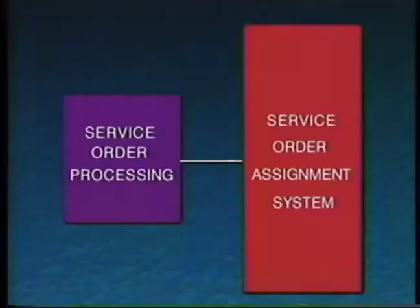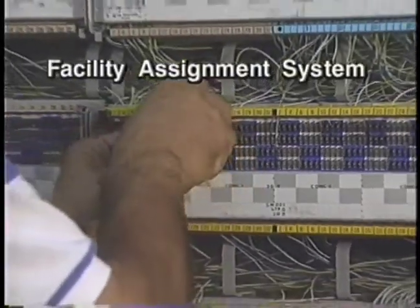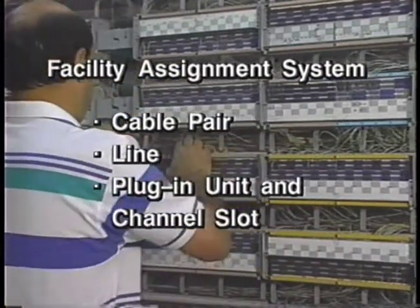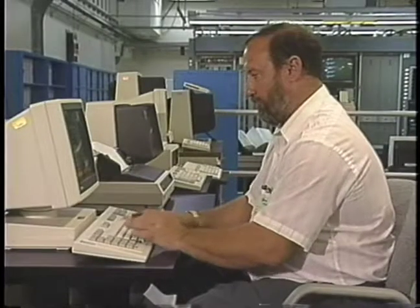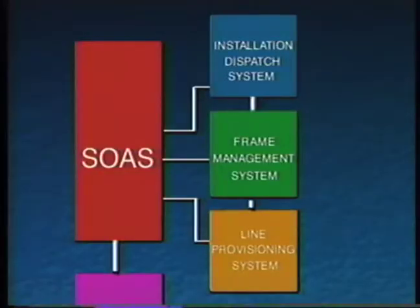Let's take a closer look at how computerized support assists in the response to Mr. Clark's request for service. First, the service order is automatically passed from service order processing to a service order assignment system. The service order assignment system has immediate access to a facility assignment system that identifies and reserves the available facilities to be used in building the circuit. More specifically, the facility assignment system identifies an available cable pair, the line from the switch to the cable pair, and the plug-in unit and channel slot if required. The information then takes off simultaneously in three directions: to the installation dispatch system, the frame management system, and the line provisioning system.